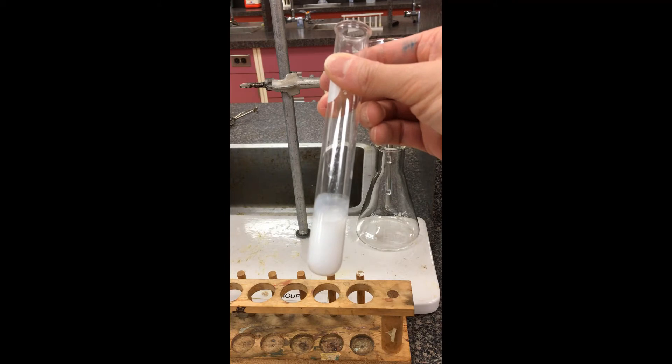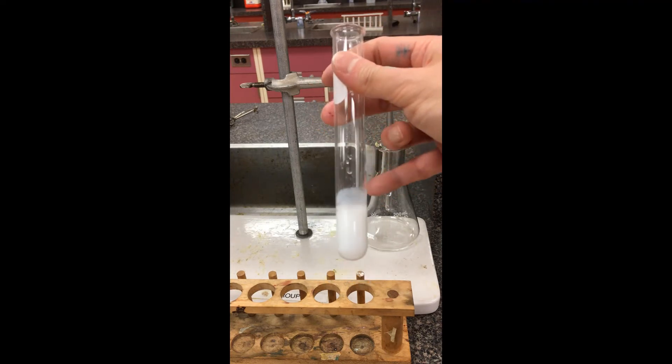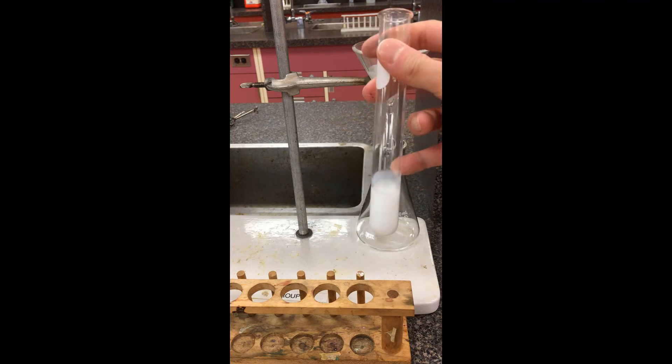Let's say I want to separate this by filtration. So the solid is definitely going to be too large to pass through the filter paper. The water in the background here should be able to get through no problem.